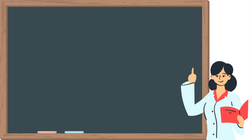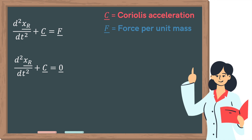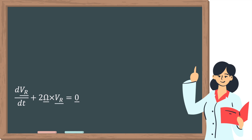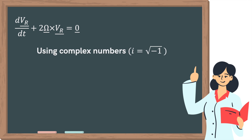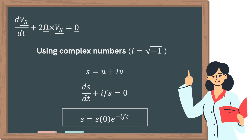The equation of motion of an element of the ocean is expressed as such, where c is the Coriolis acceleration and f is the total applied force per unit mass. Since we are considering a scenario of unsteady motion and thus the absence of applied forces, we equate f to zero. To solve this equation, we can expand it and write it in terms of velocity. We can then use complex numbers and set s to equal u plus iv, where i is the imaginary unit equal to the square root of negative 1. Therefore, this equation becomes... The solution to the equation is where s0 is the initial velocity.